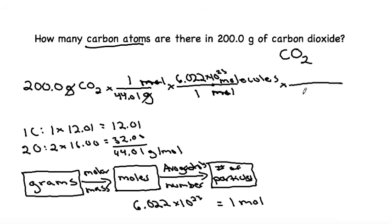Since we said that in one CO₂ molecule, we said that there is only one carbon atom, so we put the molecules on the bottom so it would cancel, and we leave the atoms of carbon on top because that's what we want to convert to. So now that we've had it set up, we can grab our calculator, multiply by the numbers on top, divide by the numbers on bottom.